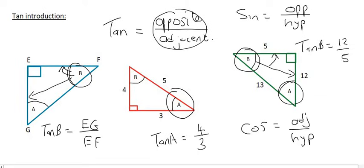And if you wanted the tan of A, that would be the opposite of that angle, which is now 5, and the adjacent is 12.